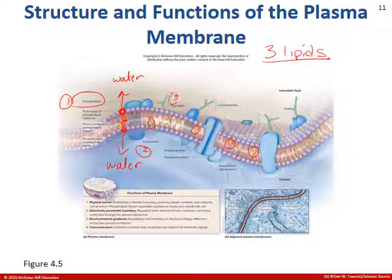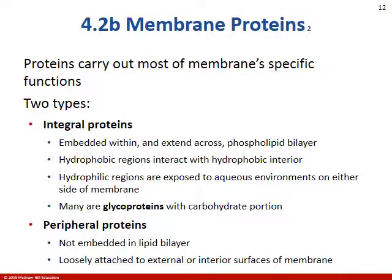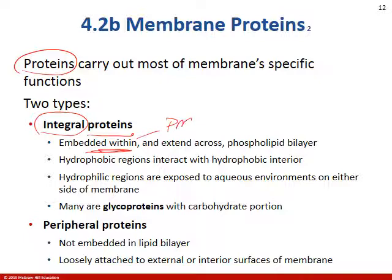The third component are glycolipids — one of the phospholipids gets tagged with glucose tags. We also have proteins — the big purple blobs. There are integral proteins, embedded within the phospholipid bilayer, and then peripheral proteins, which means outside — they're on the border, not embedded in the bilayer.